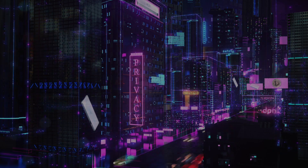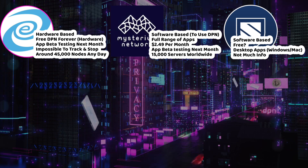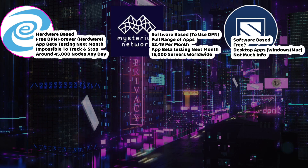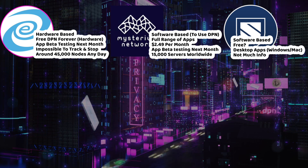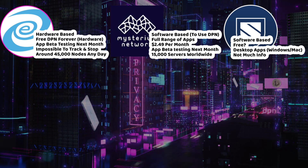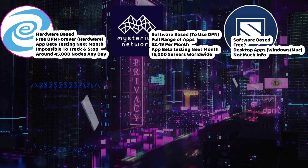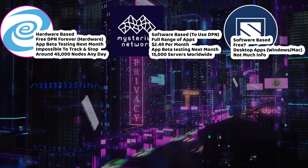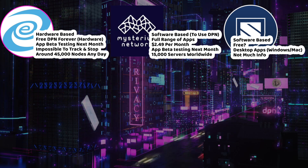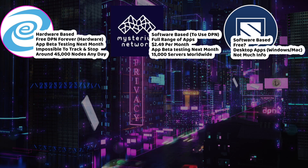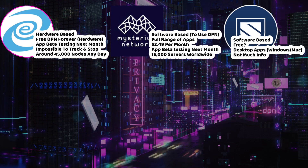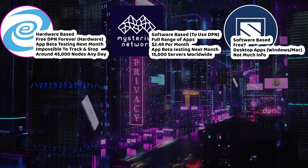Now let's go through the DPNs and their benefits. Starting with Deeper Network — it's hardware-based, and it's a free DPN forever if you have the hardware. The app beta testing is coming next month with a desktop app, Linux app, iOS app, and Android app. It is completely decentralized, so you can't stop it. When we get more validators, that will make the network way stronger. We have 45,000 nodes — way more than any VPN or DPN on the market.